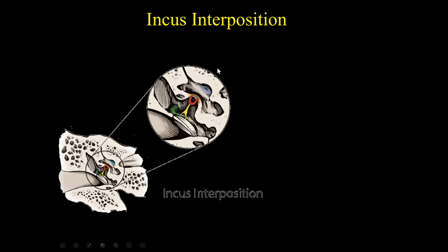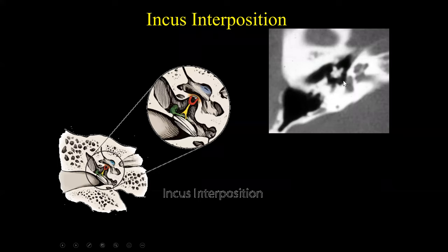A specific type of partial ossicular prosthesis is the incus interposition. Here we have the stapes in the oval window and the malleus; normally there is an incus between them. In an incus interposition, the incus is remodeled so that a portion of it extends from the malleus all the way to the stapes, recreating mechanical ossicular integrity. On imaging, this is a canal wall up mastoidectomy; we can see the head of the malleus, and with a leap of faith the triangular portion of the short process of the incus — just deep to this is the stapes. This is a classic incus interposition.